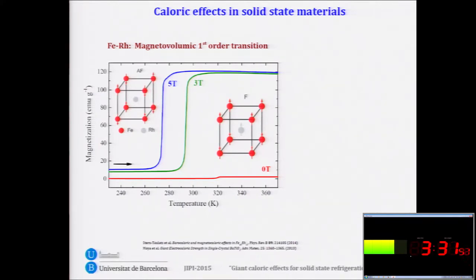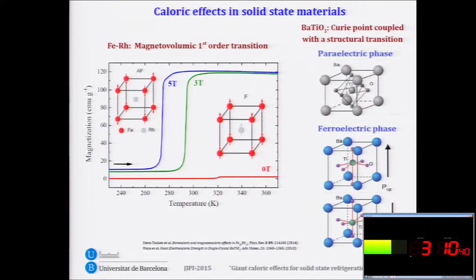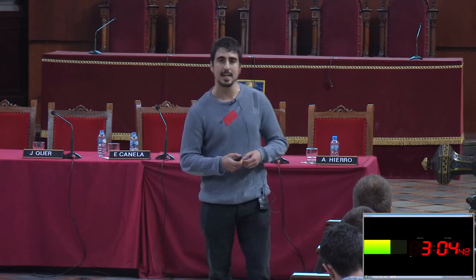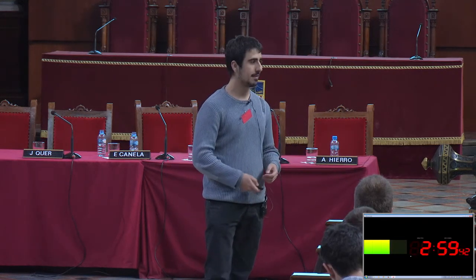Another nice example is barium titanate, which exhibits a first-order transition from a paraelectric phase with no net electric polarization to a ferroelectric phase with a net electric polarization. This happens because of the relative displacement between titanium cations and oxygen anions, and a net polarization arises during the transition. So if we apply an electric field in the vicinity of this transition, we can obtain a large entropy and temperature change.